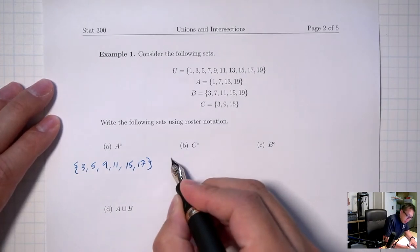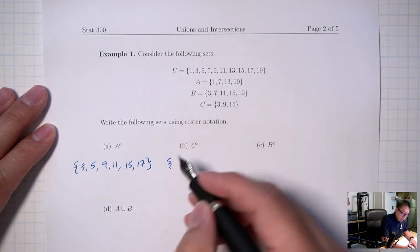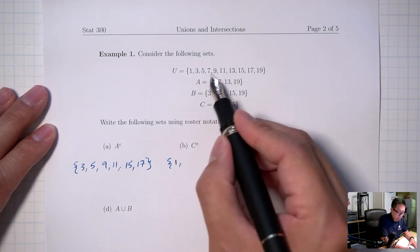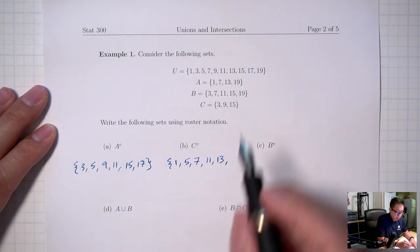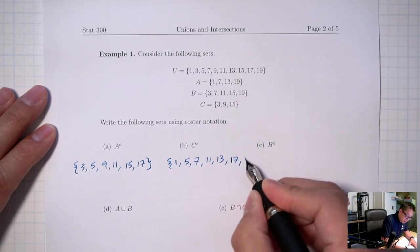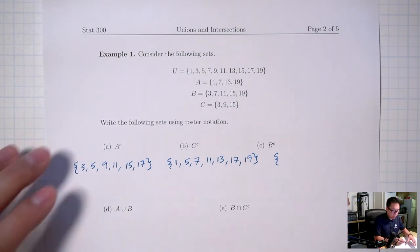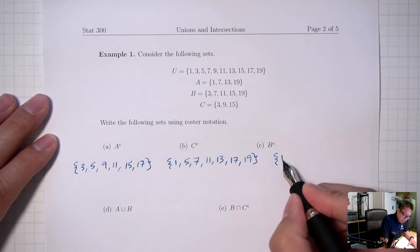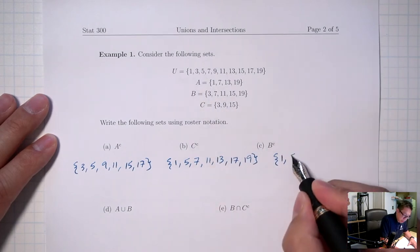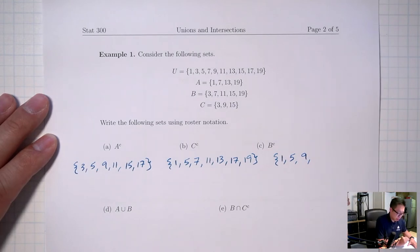Next up is C complement — everything that's not in C. Going through the universal set: 1, then 5 and 7, then 11 and 13, then 17 and 19. And that's C complement. Next is B complement — everything that's not in B. Going through the universal set: 1 is not in B; 5 is not in B; and then 13 and 17. Those are the complements.